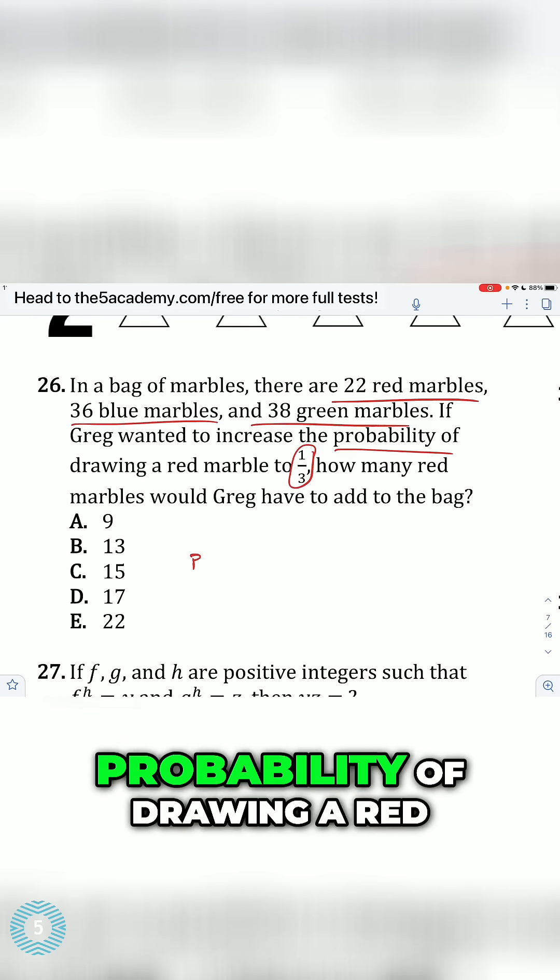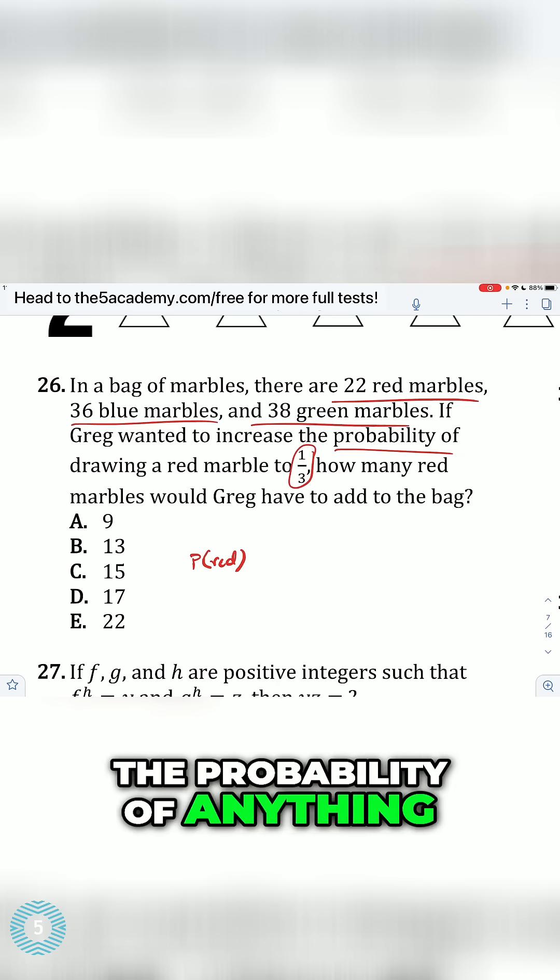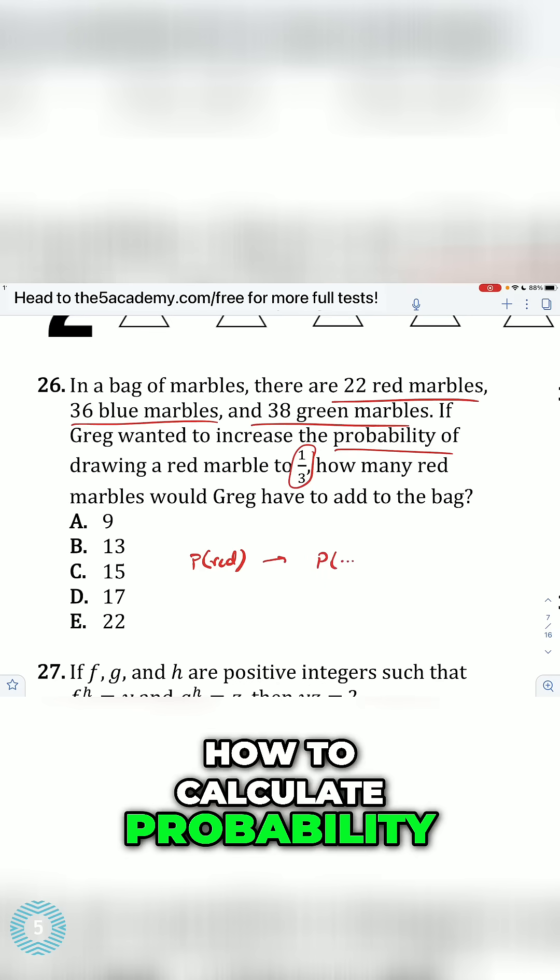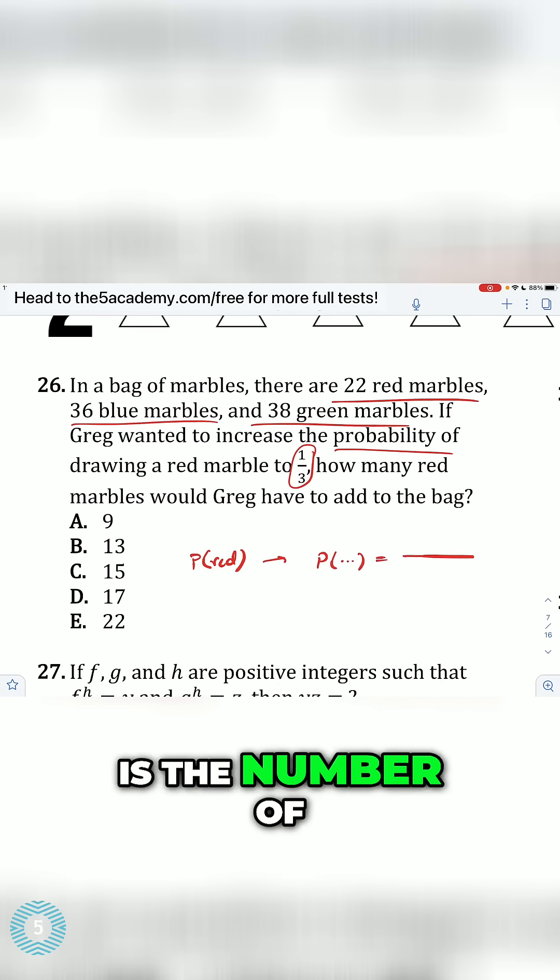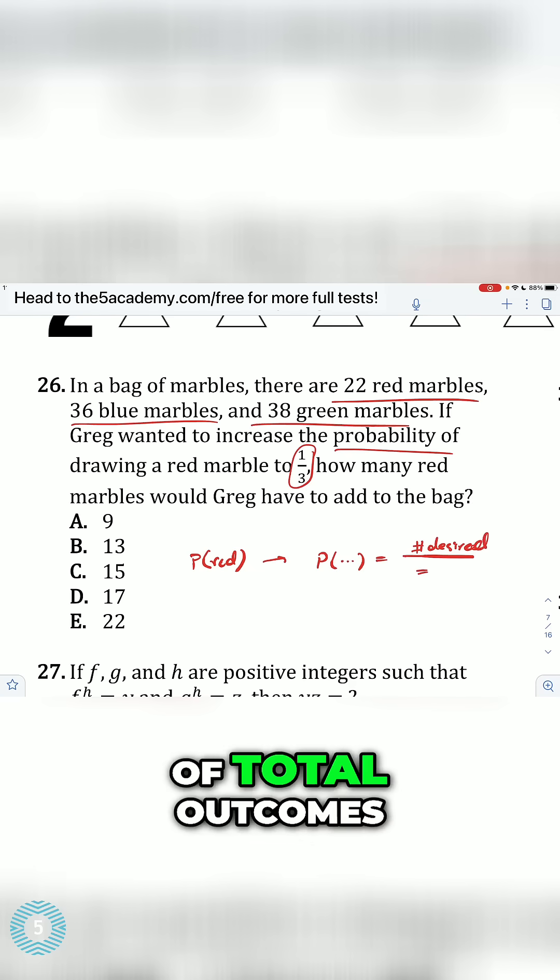So what's the current probability of drawing a red? Well, the probability of anything, if you don't know how to calculate probability, of an event is the number of desired outcomes divided by the number of total outcomes.